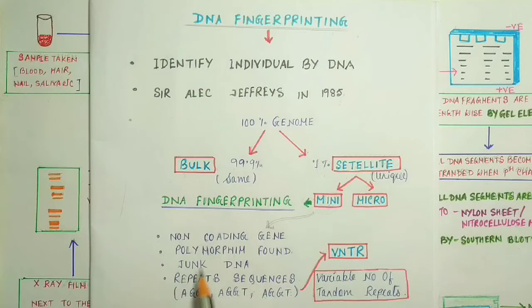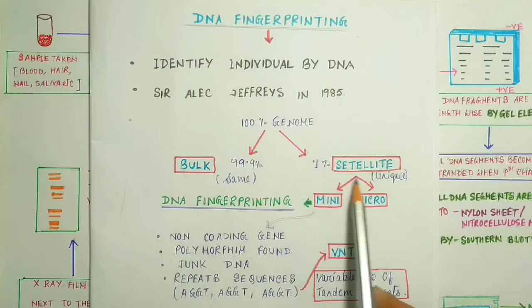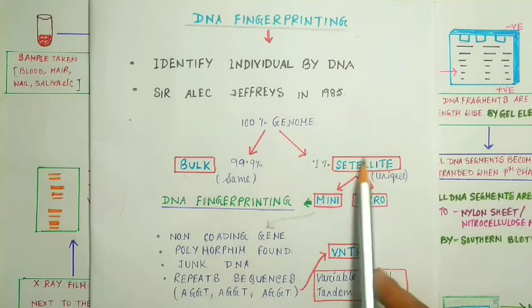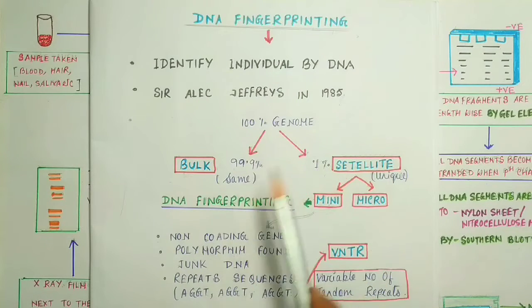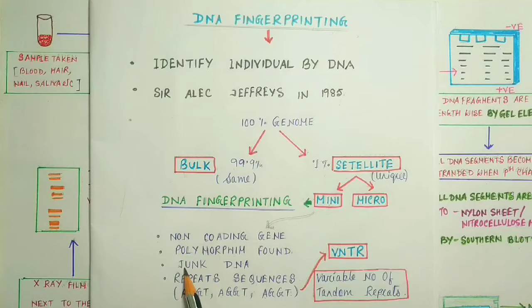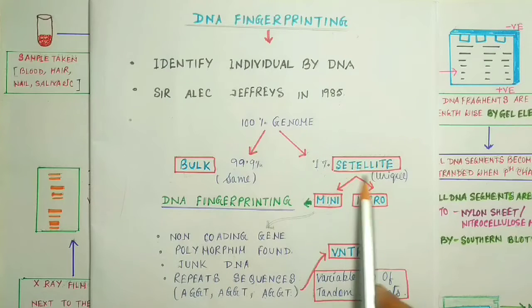The third point is junk DNA. Satellite DNA is also called junk DNA since they have no significant contribution to cell function as they don't take part in protein synthesis. Like junk food, which is not healthy for our body, satellite DNA is also known as junk DNA.